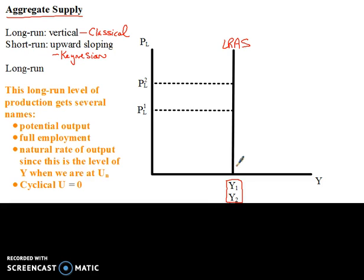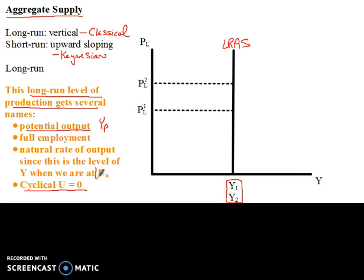Let's get some vocabulary out of the way. The long-run level of production — shown as Y1 and Y2 — gets several names. Sometimes it's called potential output, or potential GDP, which we've also written as YP. It's also called full employment. Now, full employment doesn't mean everybody is working; it means there's no cyclical unemployment. When cyclical unemployment is zero, we are at the natural rate of unemployment, which gives us the natural rate of output. All that language describes the same concept: potential gross domestic product.